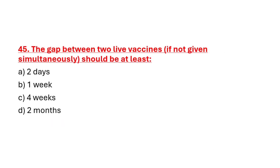Question 45: The gap between two live vaccines, if not given simultaneously, should be at least. Option A: Two days. Option B: One week. Option C: Four weeks. Option D: Two months. Correct answer is Option C: Four weeks.